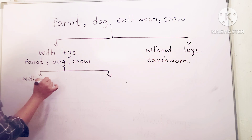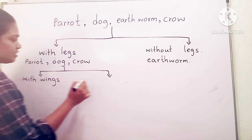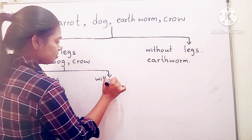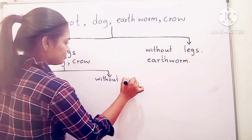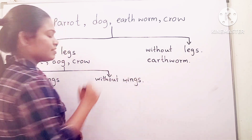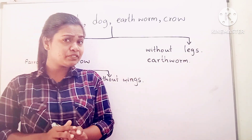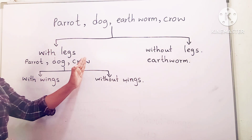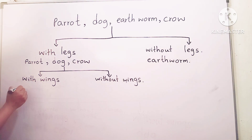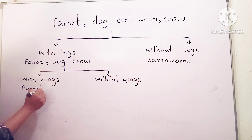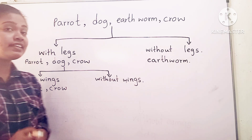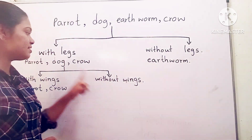With wings and without wings. Tell me the animals with wings out of these three. Parrot and crow have wings. With wings: parrot and crow.